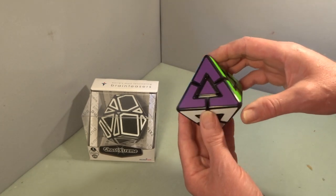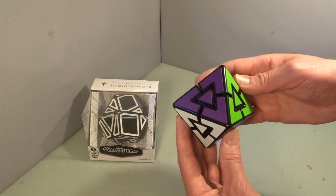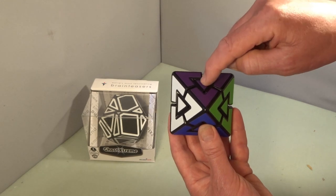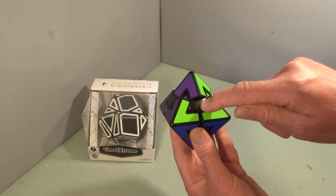It might surprise you that this is actually the equivalent of a three by three. So these are like the equivalent of the middle pieces and these are the corner pieces and these are the edge pieces.